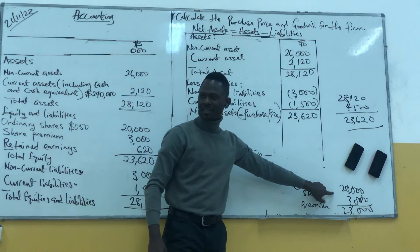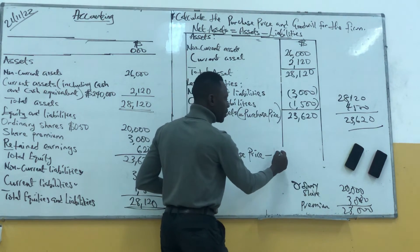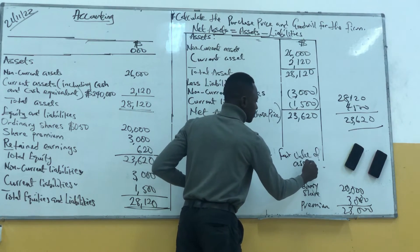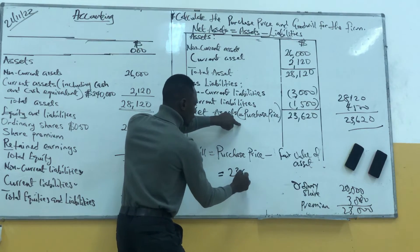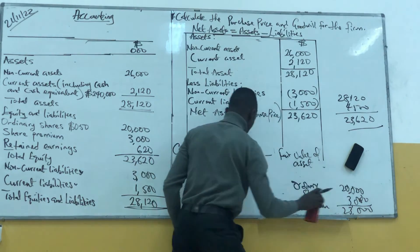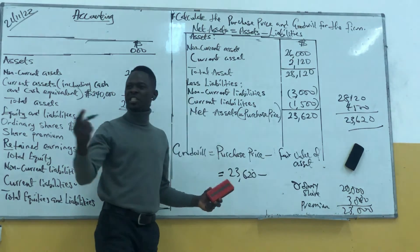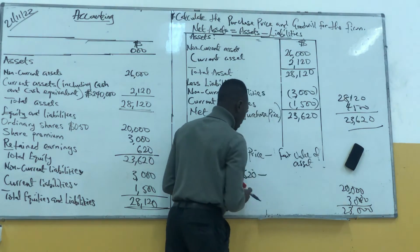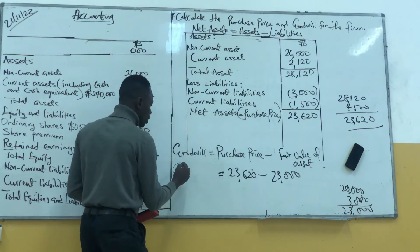That will be $23,000. So the fair value of assets is $23,620. So this minus this — the goodwill is $23,000 minus $620, which equals $23,000. So how much is the goodwill? Purchase price minus fair value of assets — this minus this.